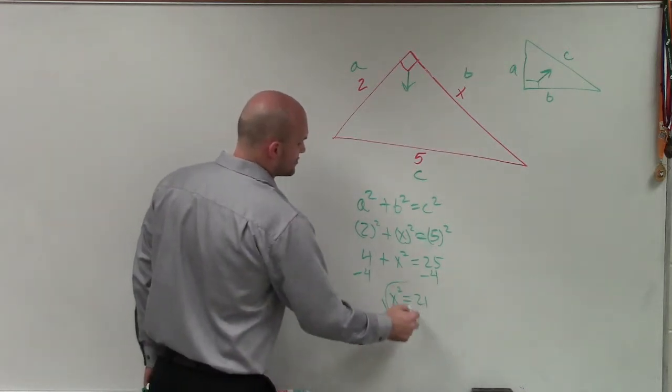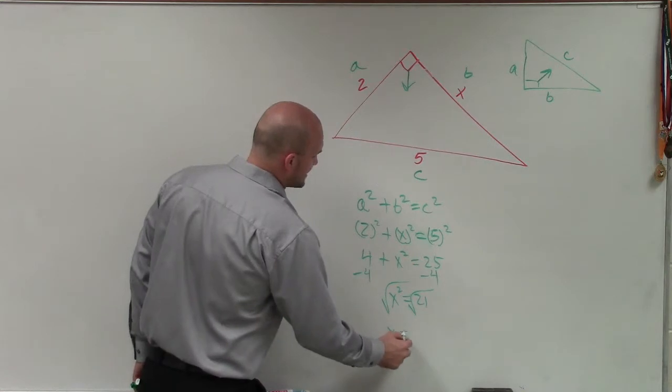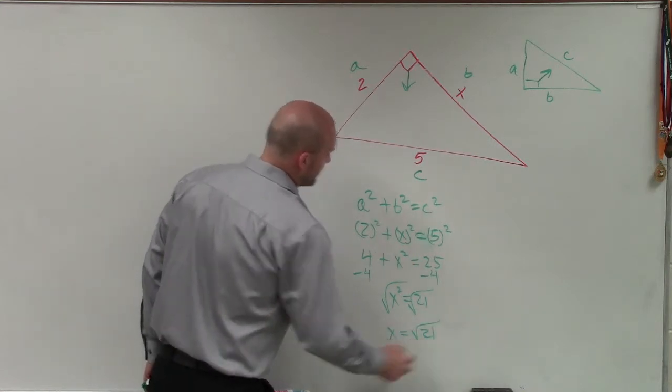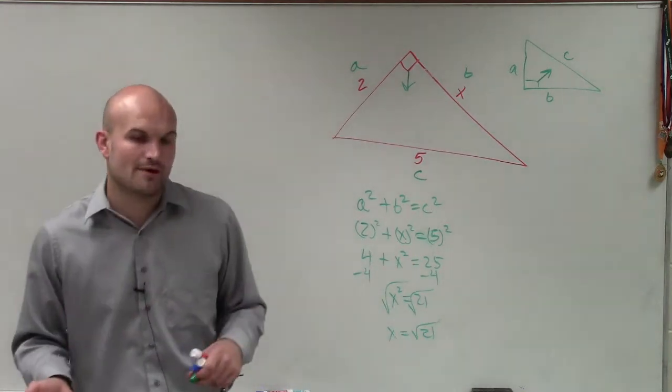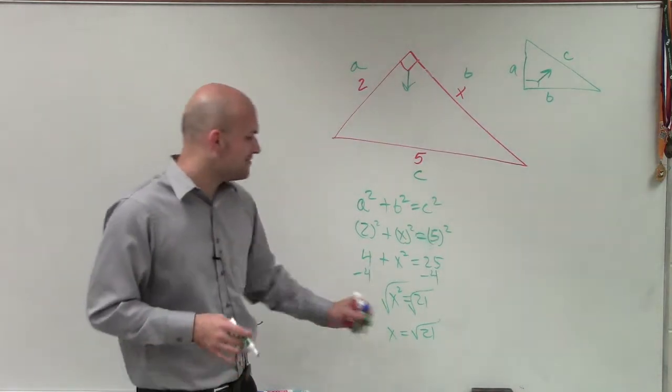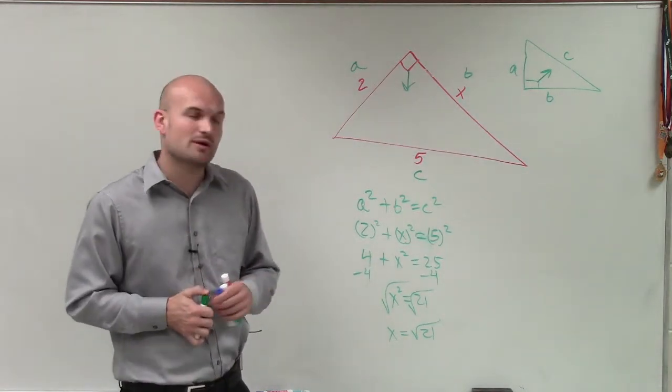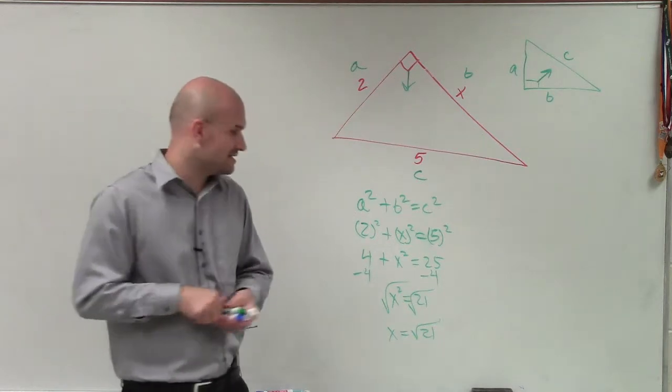Now to solve for x, I take the square root of both sides, and x equals the square root of 21. Now, until we get into approximating square roots or simplifying square roots, I'm just going to leave our answer at the square root of 21 and not try to approximate with a decimal.